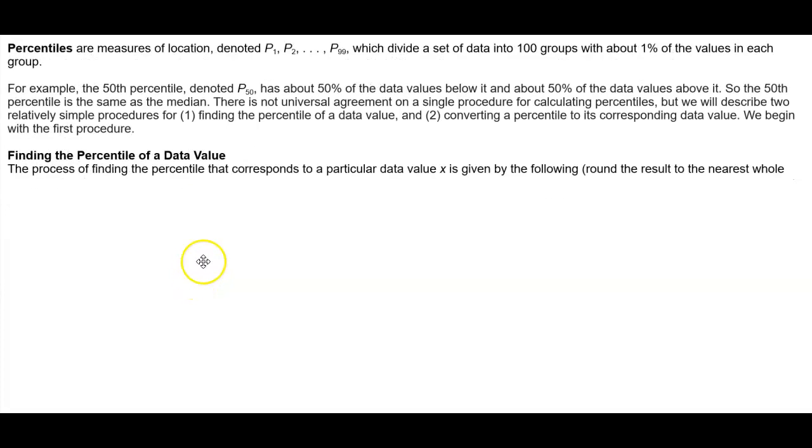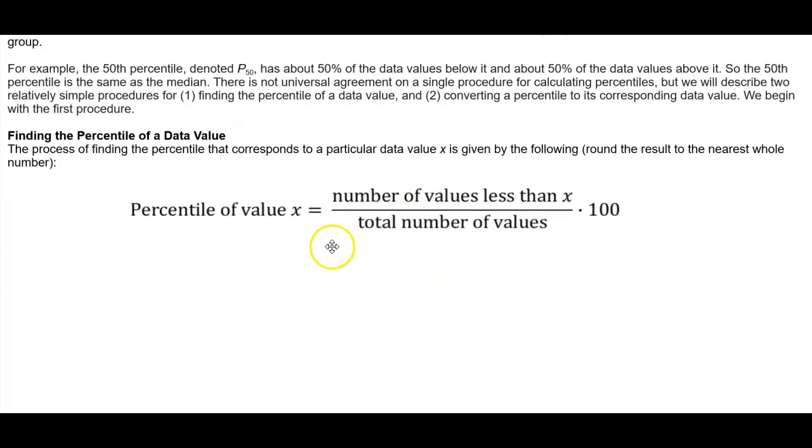Finding the percentile of a data value. The process of finding the percentile that corresponds to a particular data value x is given by the following. You are going to round the result to the nearest whole number. Here is the formula: The percentile value of x is equal to the number of values less than x divided by the total number of values times 100.